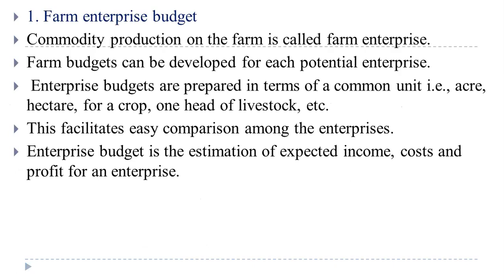The first type is the farm enterprise budget. Commodity production on the farm is called a farm enterprise — whatever crop or commodity is produced on the farm. A farm budget can be developed for each potential enterprise.